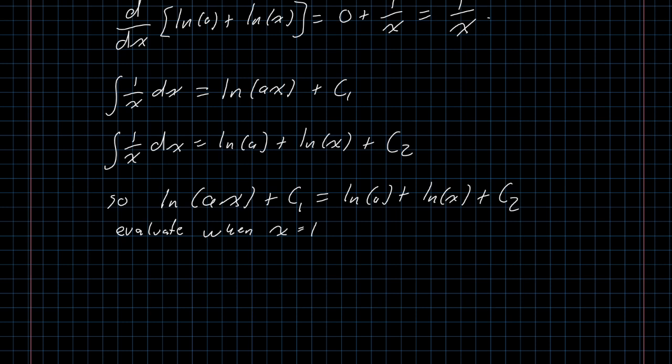The next step is probably the weirdest in the whole process. I want to evaluate this expression when x is equal to 1. That gives me that the natural log of a plus c1 is equal to the natural log of a plus the natural log of 1 plus c2. But of course, the natural log of 1 is just 0. And because we have natural log of a on both sides of the equation, we can subtract it from both sides, canceling them out, and we get that those arbitrary constants that I said were probably different are not different after all. They are the same thing.